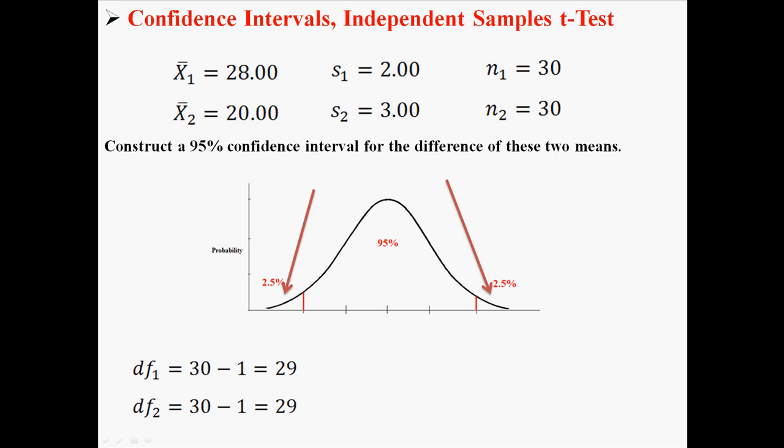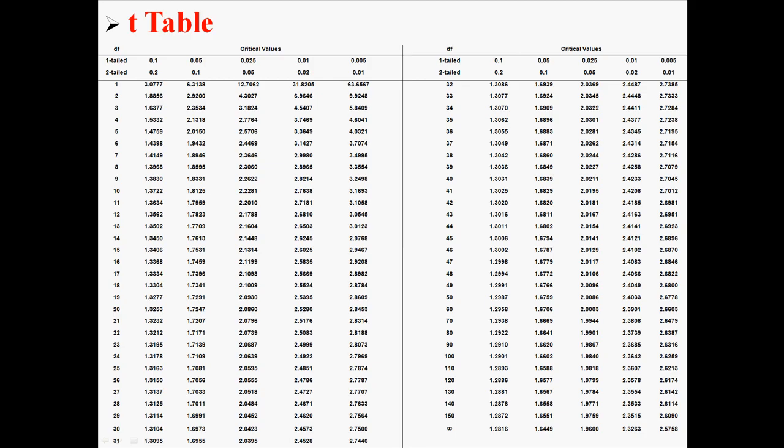Usually in an independent sample t-test, when you're looking up the t value, you will use the smaller degrees of freedom. In this case, they're both 29, so I'm just going to use 29. So I'm going to go to my t table, and we're going to use an alpha of 0.05 and degrees of freedom 29 to look up our t value, which in this case would be 2.0452.